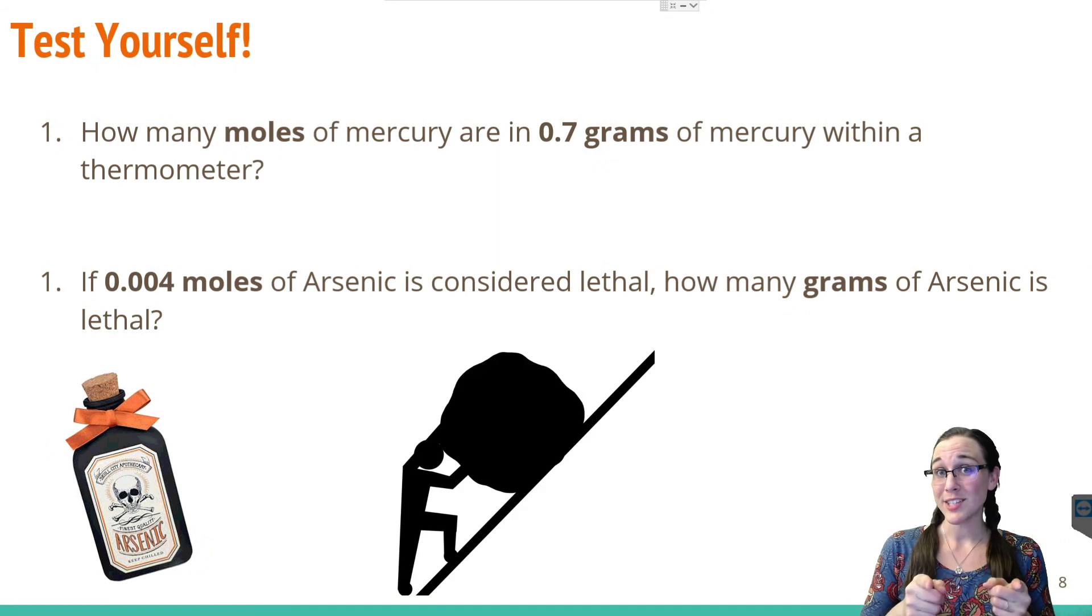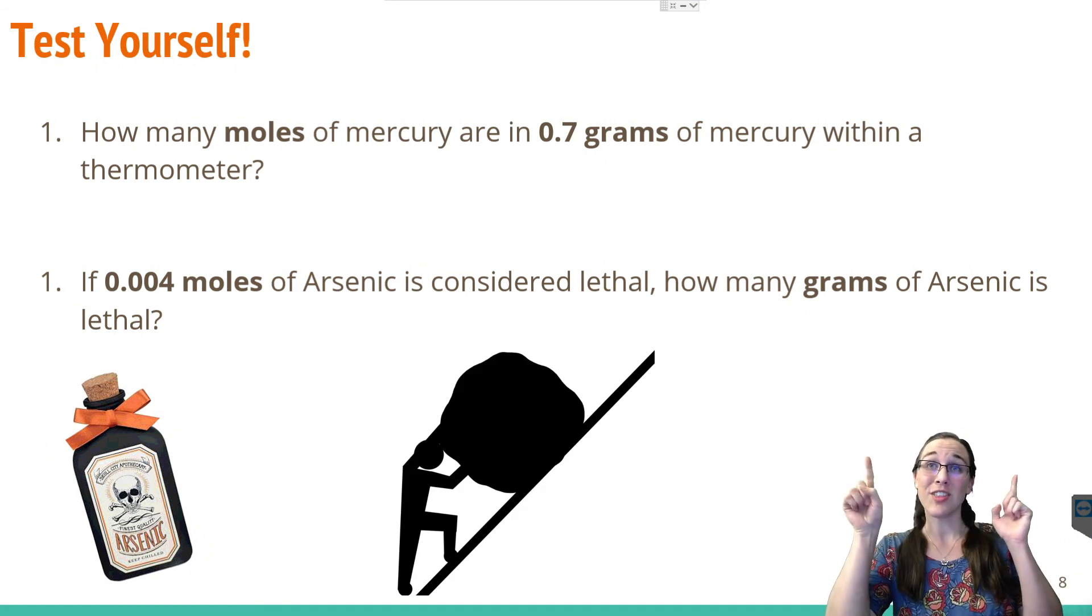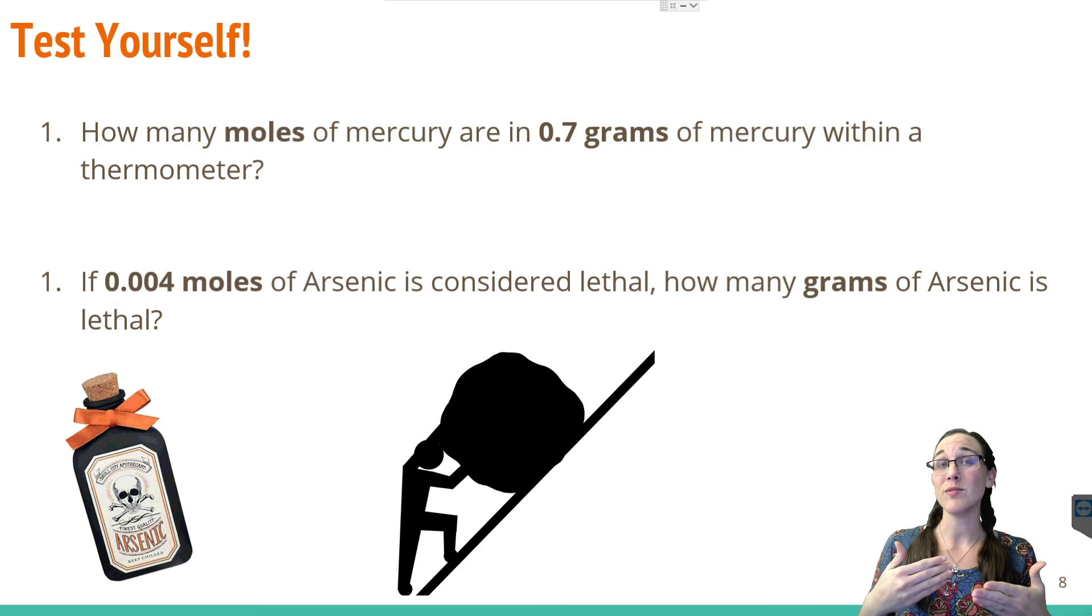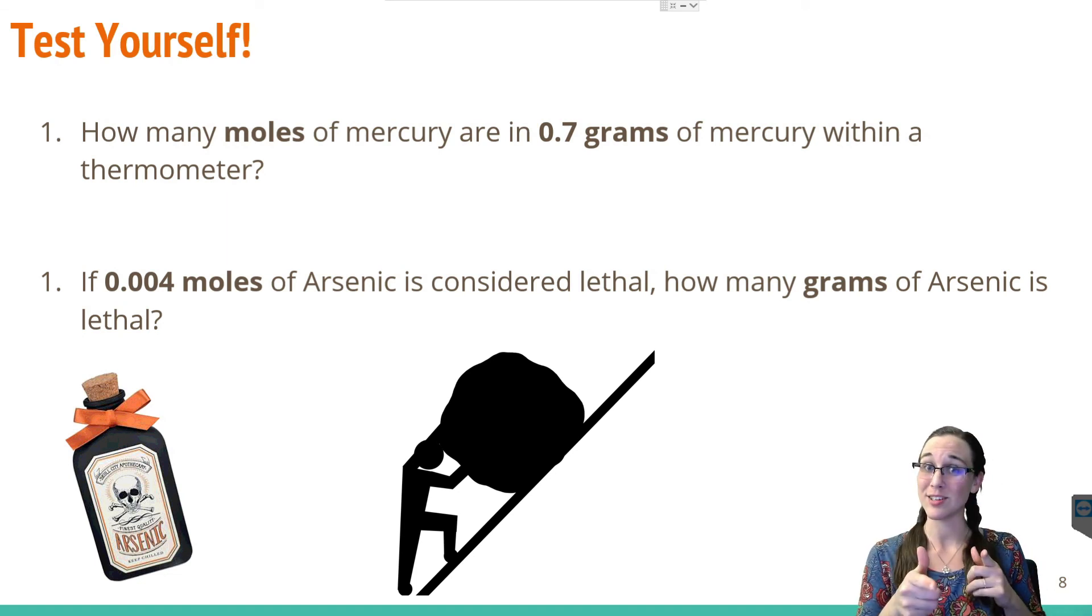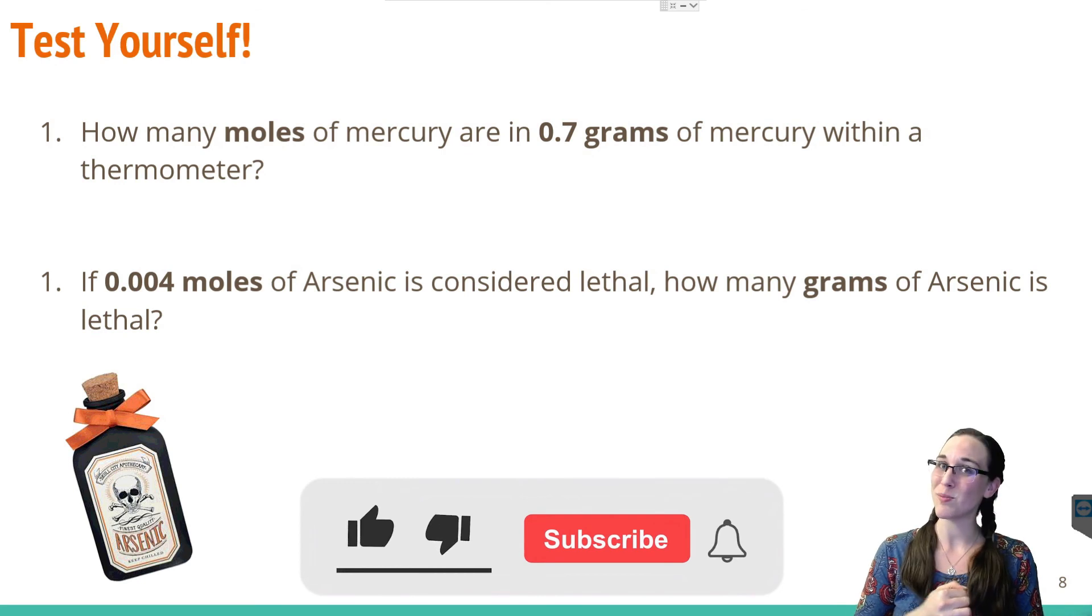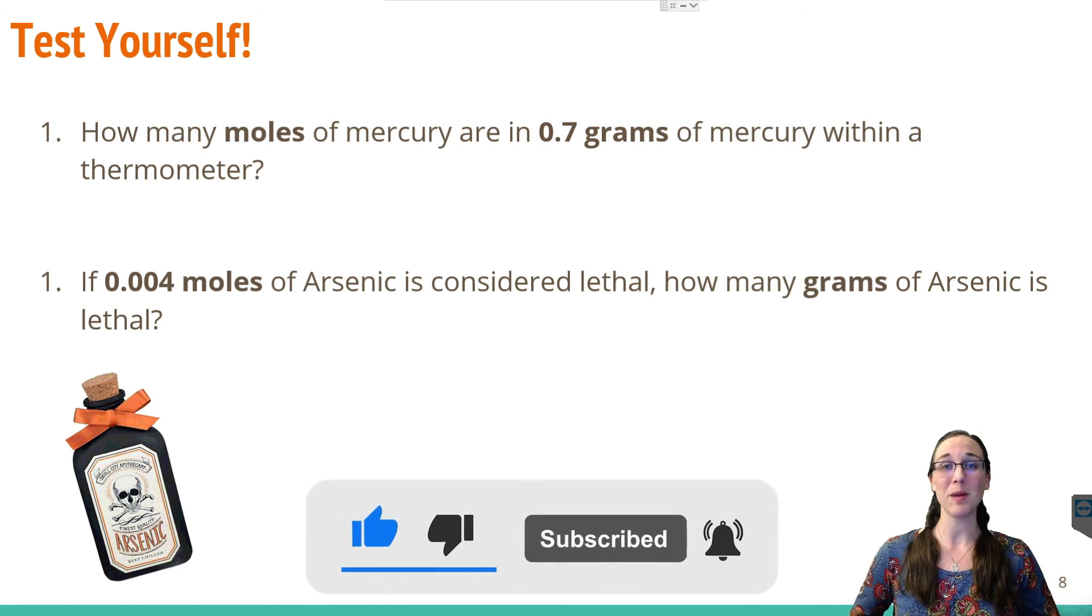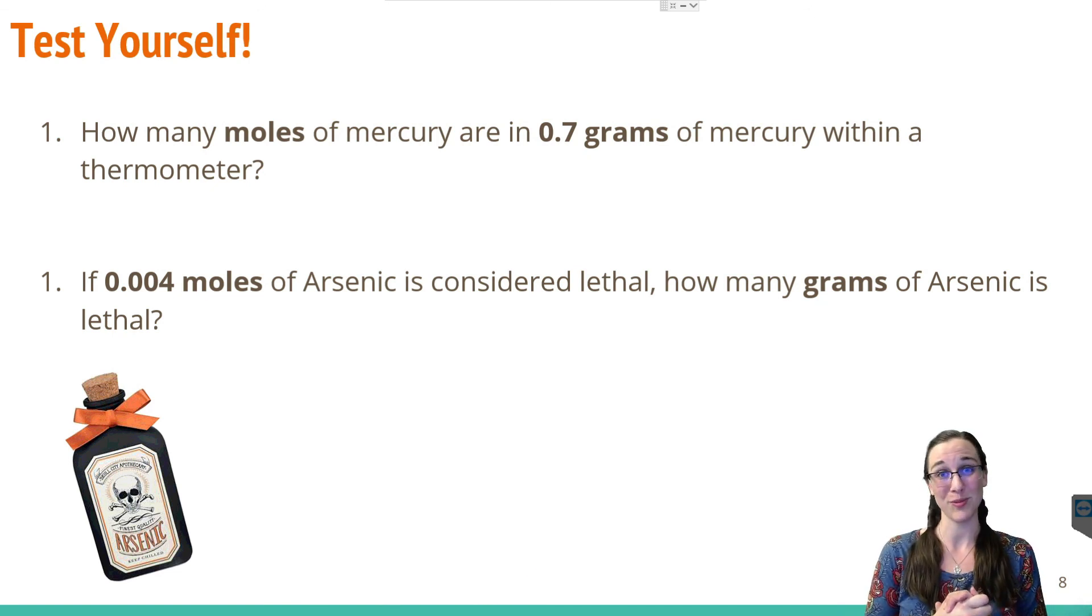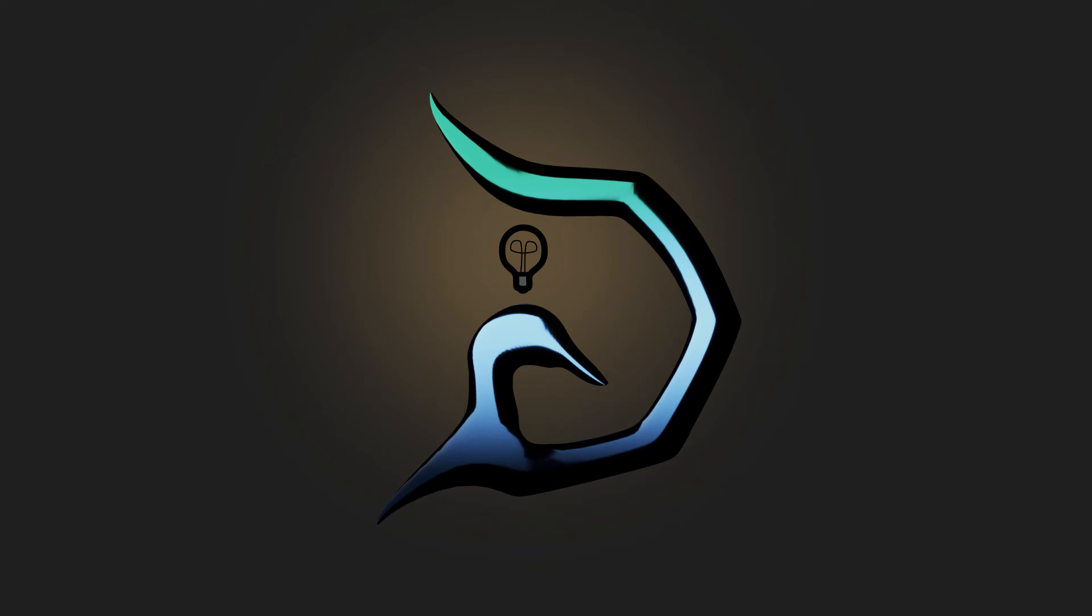Before you leave this video, make sure you test yourself before you wreck yourself. Make sure that you can answer these two questions. How many moles of mercury are in 0.7 grams of mercury within a thermometer? And if 0.004 moles of arsenic is considered lethal, that's a real thing by the way, how many grams of arsenic is considered lethal? Now that you know how to use molar mass as a conversion factor, you can solve both of these questions with ease going from moles to grams or grams to moles. I hope that was helpful and if so, please give me a quacks up and subscribe to my channel for more educational content and to help other people like yourself find this content and help them too. No ducks, no glory.